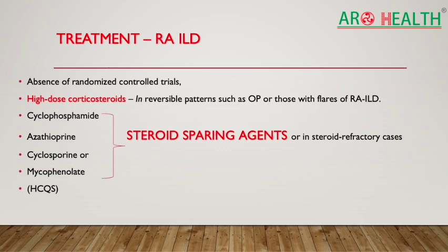For RA-ILD treatment, RCTs are mostly absent. High-dose steroids are used for acute-onset organizing pneumonia or acute flare. In steroid-refractory patients, cyclophosphamide, azathioprine, mycophenolate, and cyclosporine are tried. Patients are also commonly given hydroxychloroquine (HCQ) in clinical practice, though the authors of the reviewed article do not specifically mention HCQ in their drug list.